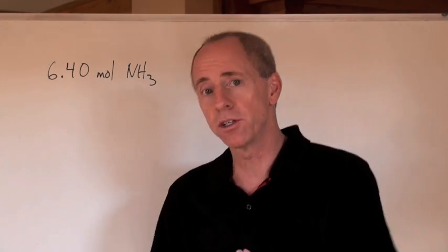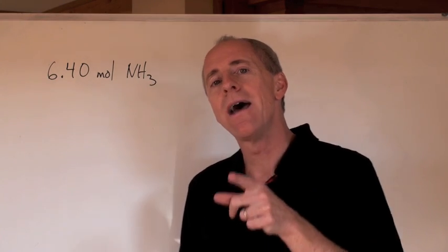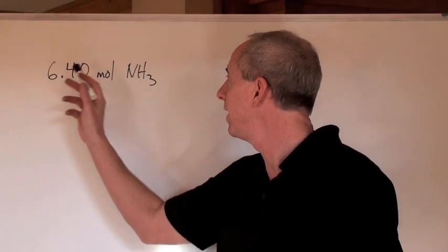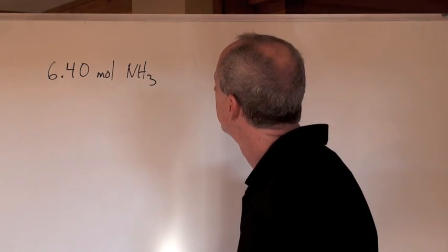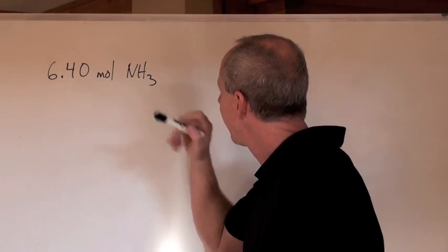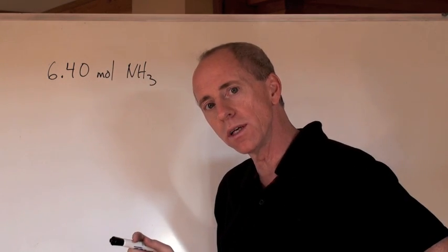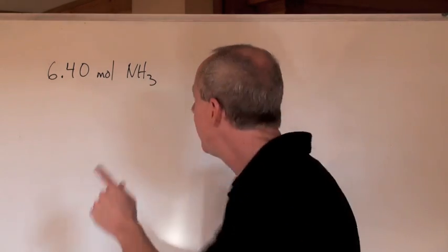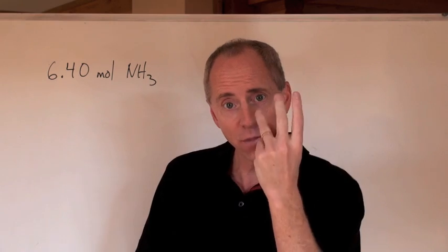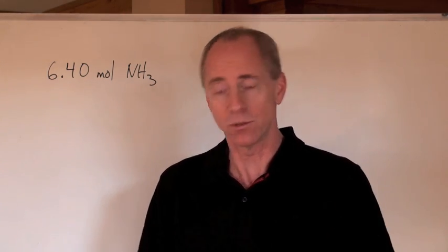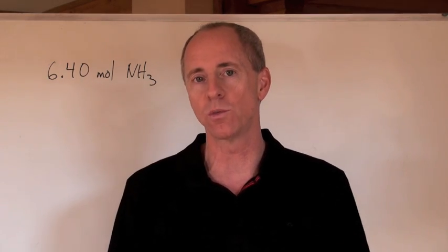Here's a trickier question. You've got 6.40 moles of ammonia — how many atoms of hydrogen do you have in that quantity? You can't go directly from moles of ammonia to atoms of hydrogen, because we're talking about a molecule. In one molecule of ammonia, you actually have three atoms of hydrogen.